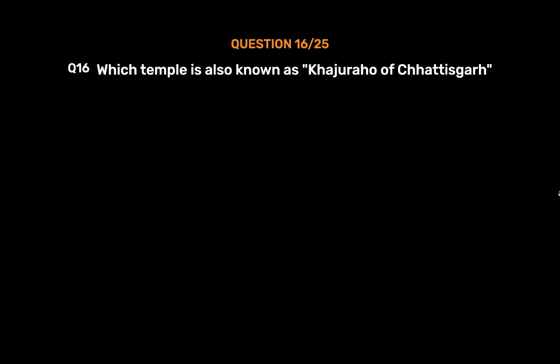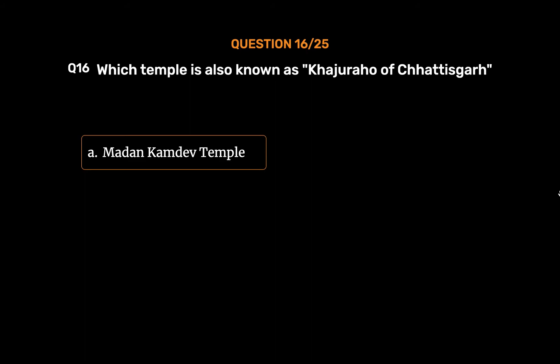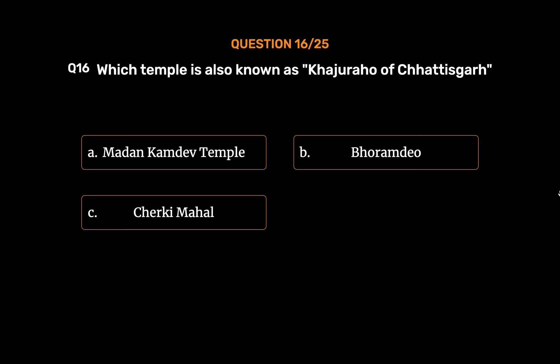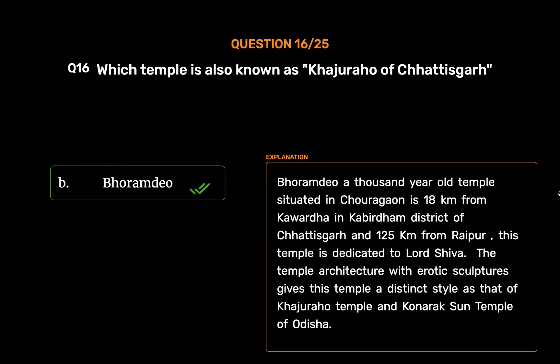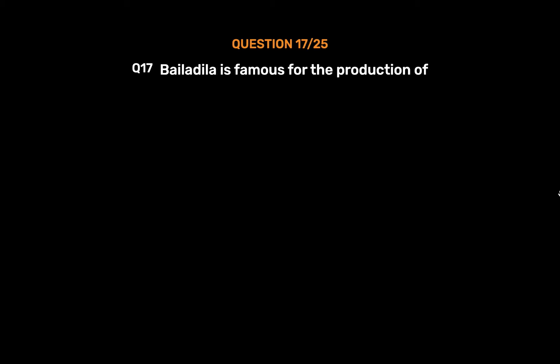Question No. 16: Which temple is also known as the Khajuraho of Chhattisgarh? Option A: Madan Kamdev Temple. Option B: Bhoramdeo. Option C: Cherki Mahal. Option D: Mandawa Mahal. The correct answer is Option B: Bhoramdeo. Bhoramdeo is a thousand-year-old temple situated in Chauragaon, 18 km from Kawardha in Kabirdham district of Chhattisgarh and 125 km from Raipur. This temple is dedicated to Lord Shiva. The temple architecture with erotic sculptures gives it a distinct style similar to the Khajuraho Temple and Konark Temple of Orissa.